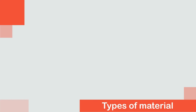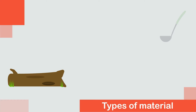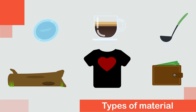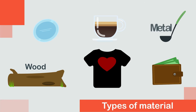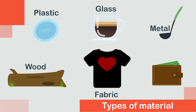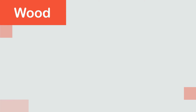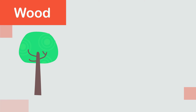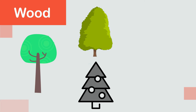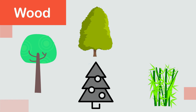Let's discuss some common types of material, such as wood, metal, plastic, glass, fabric, and leather.